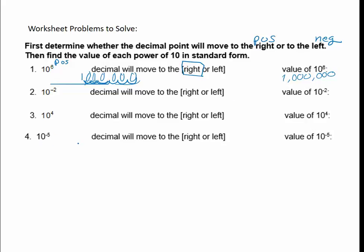Let's look at number 4. This is a negative exponent, so move to the left. You can highlight or circle the word left, or rewrite it. To find the value, put your 1 down and move to the left — the decimal is after the 1 — so go 1, 2, 3, 4, 5 places, put your decimal, and fill in your bumps with zeros. So 0.00001 is the value of 10 to the negative 5th.